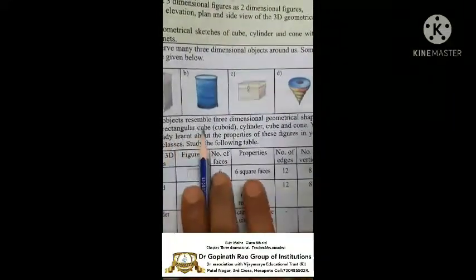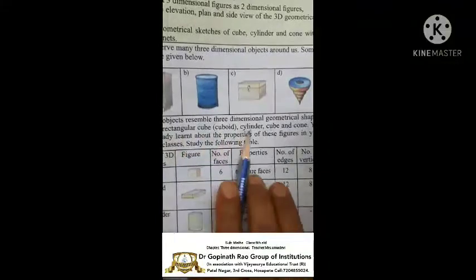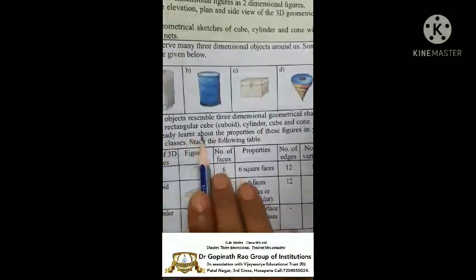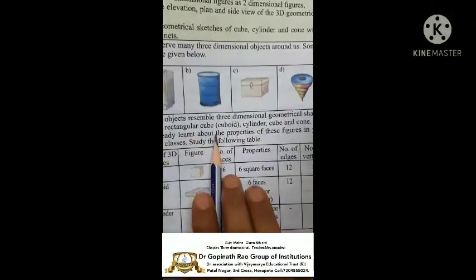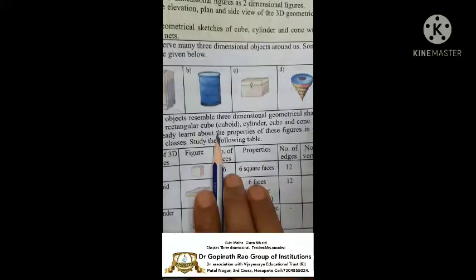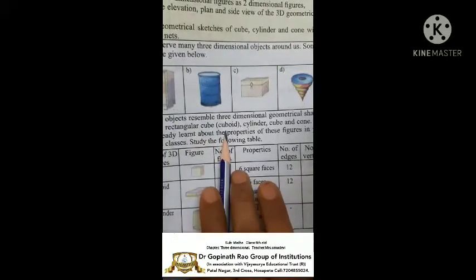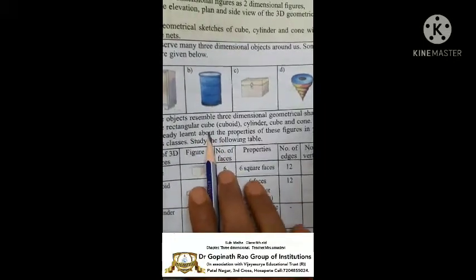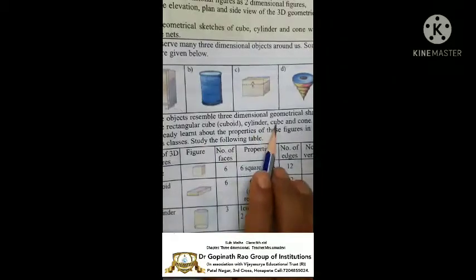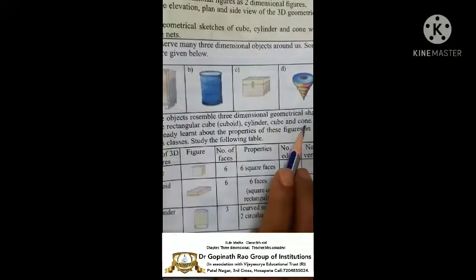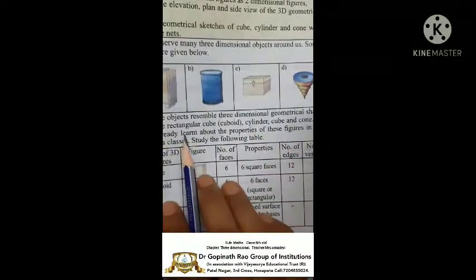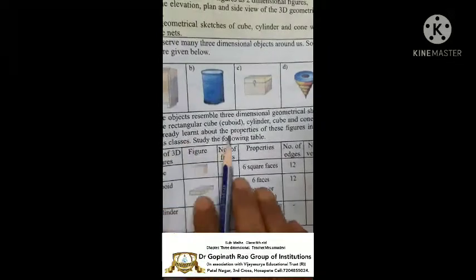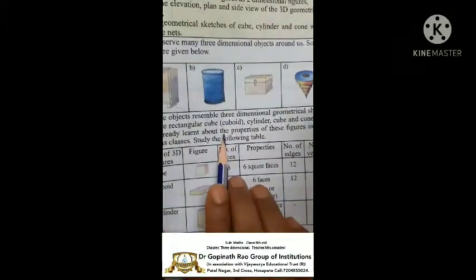These objects resemble 3-dimensional geometrical shapes. They are rectangular cuboid, cube, cylinder, cube, and cone. You have already learnt about these in previous classes.